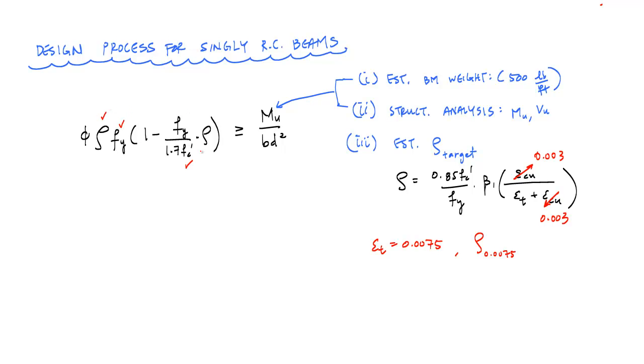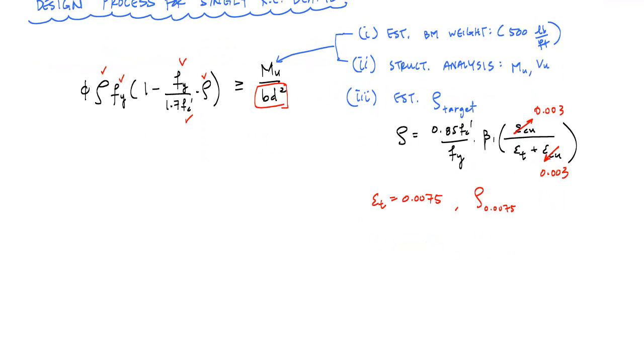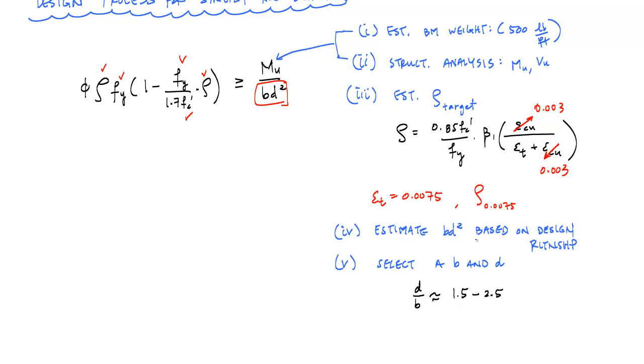So now you have this reinforcement ratio, you have material properties. And once you can estimate that, then you're going to use this whole relationship here. You've got rho, you've got an fy and fc prime typically specified already. And you're going to use this rho value that you're assuming or you're targeting to estimate BD squared. So the next step is number four, to estimate or determine BD squared based on design relationship. And then you can select a B and a D. And normally what's done in reinforced concrete is to try to select a D over B ratio that's approximately anywhere from 1.5 to 2.5-ish, but that's usually an economical range around two-ish.